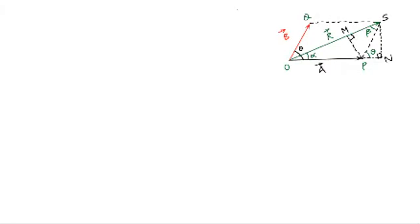We are here to find out the derivation of the formula for the resultant R of two vectors A and B. We can write resultant R is equal to vector A plus vector B. This is vector A, this is vector B, and this is the resultant.